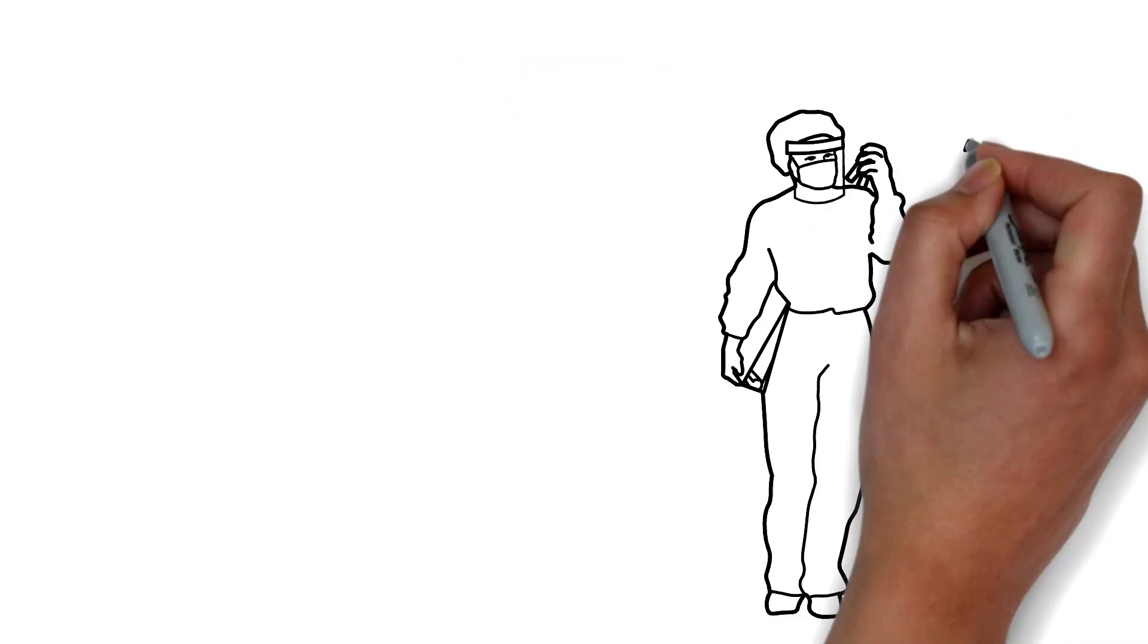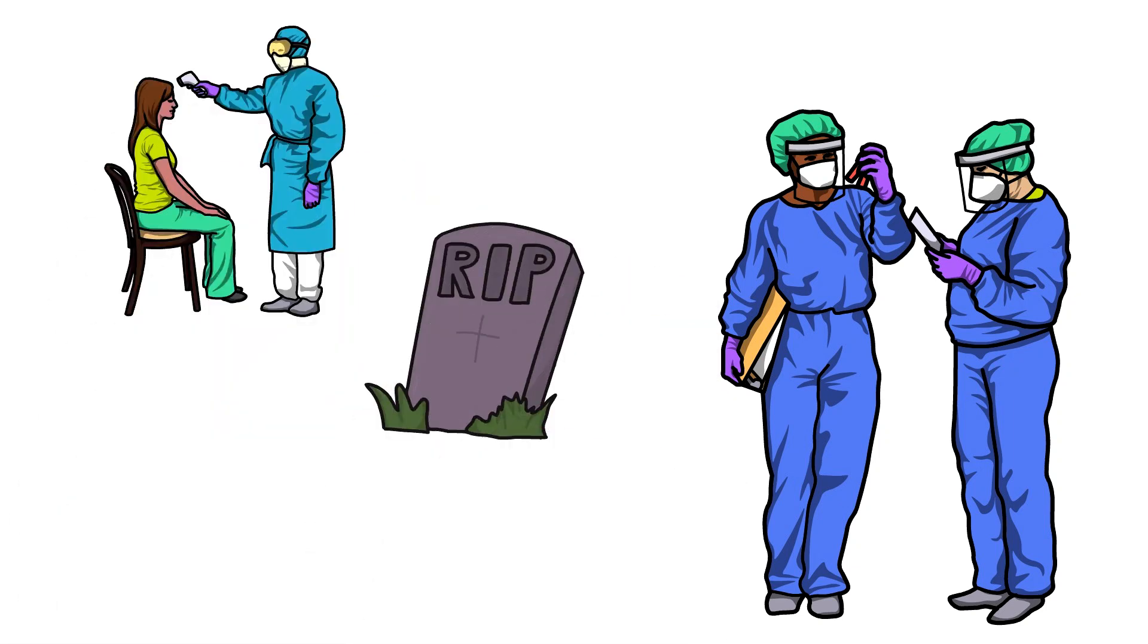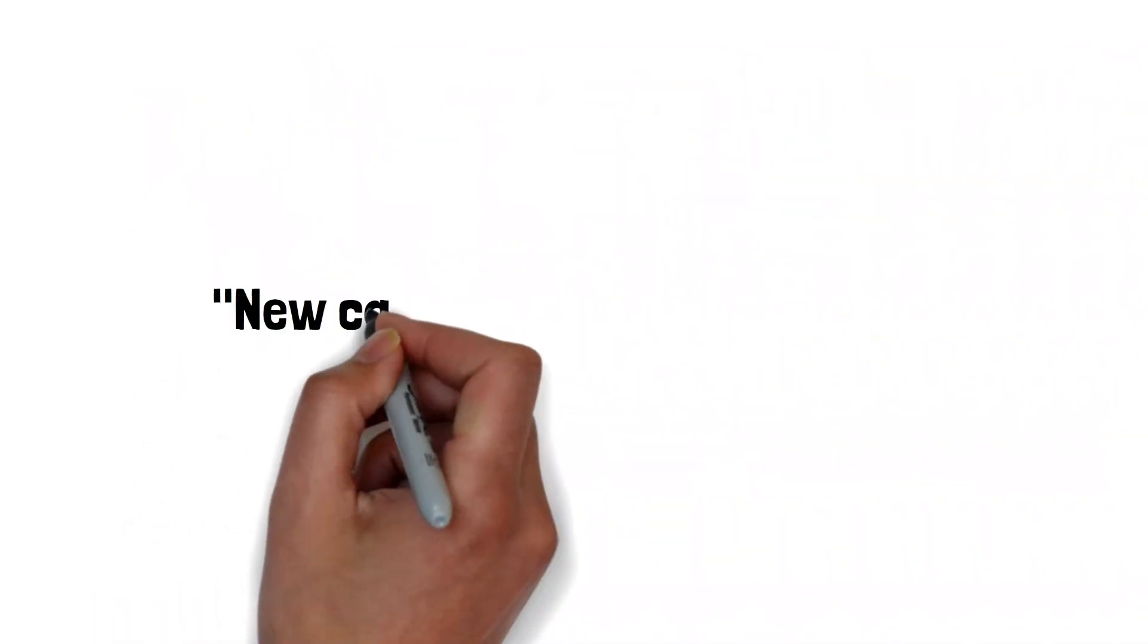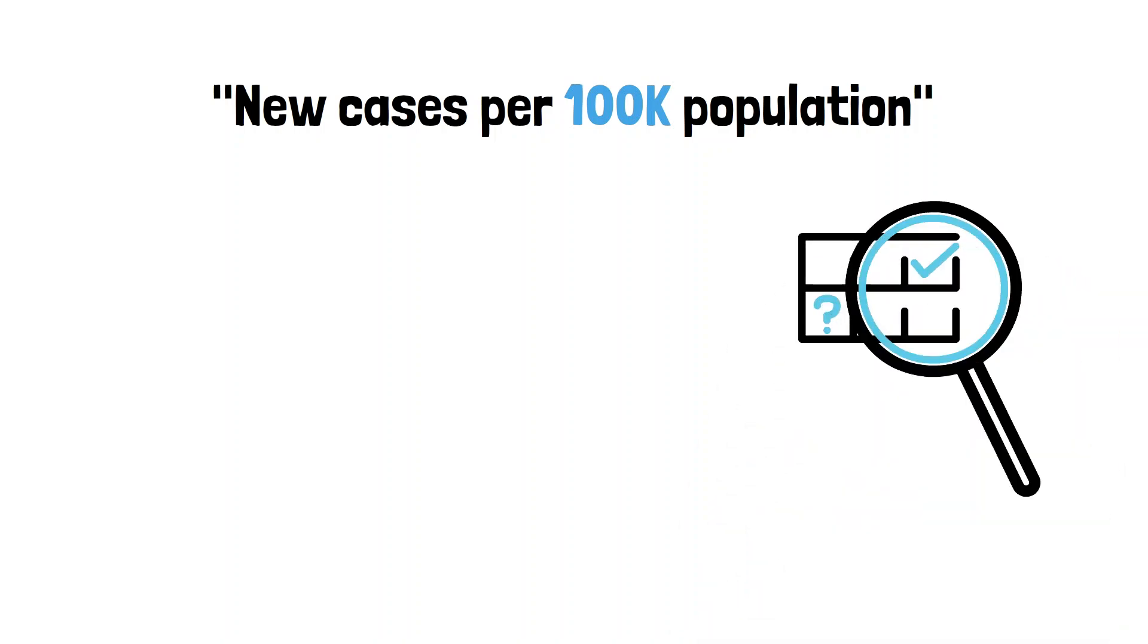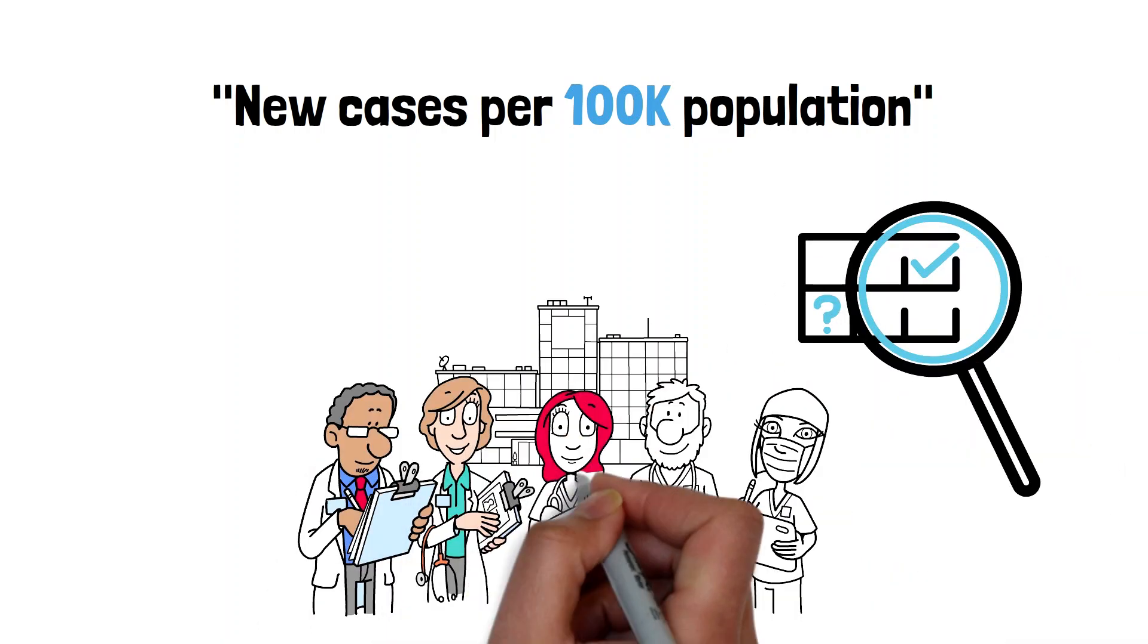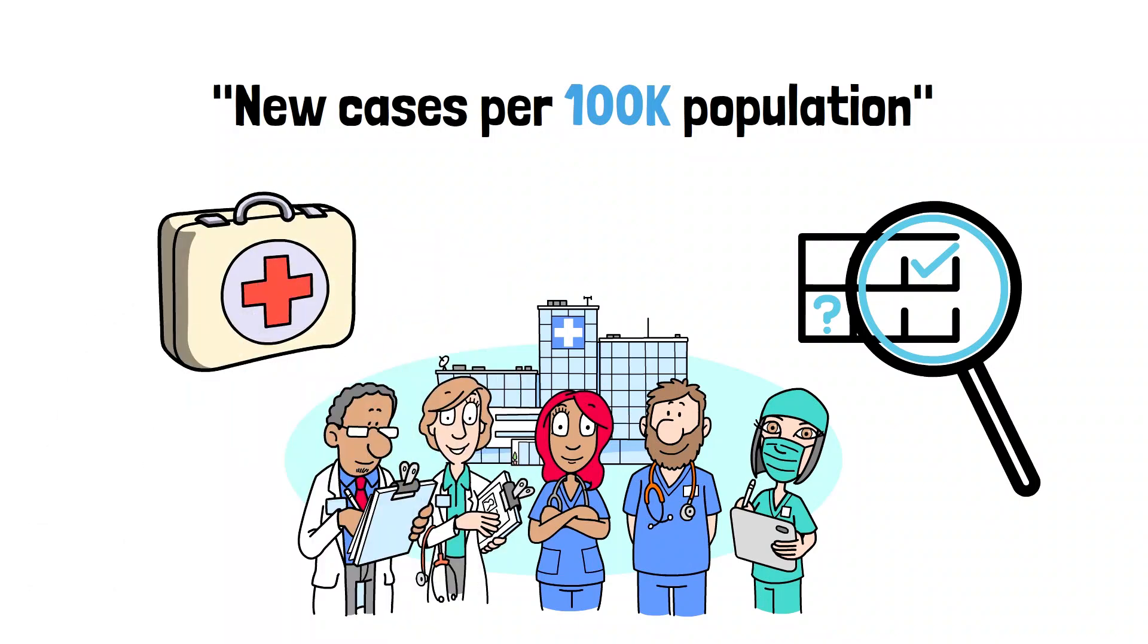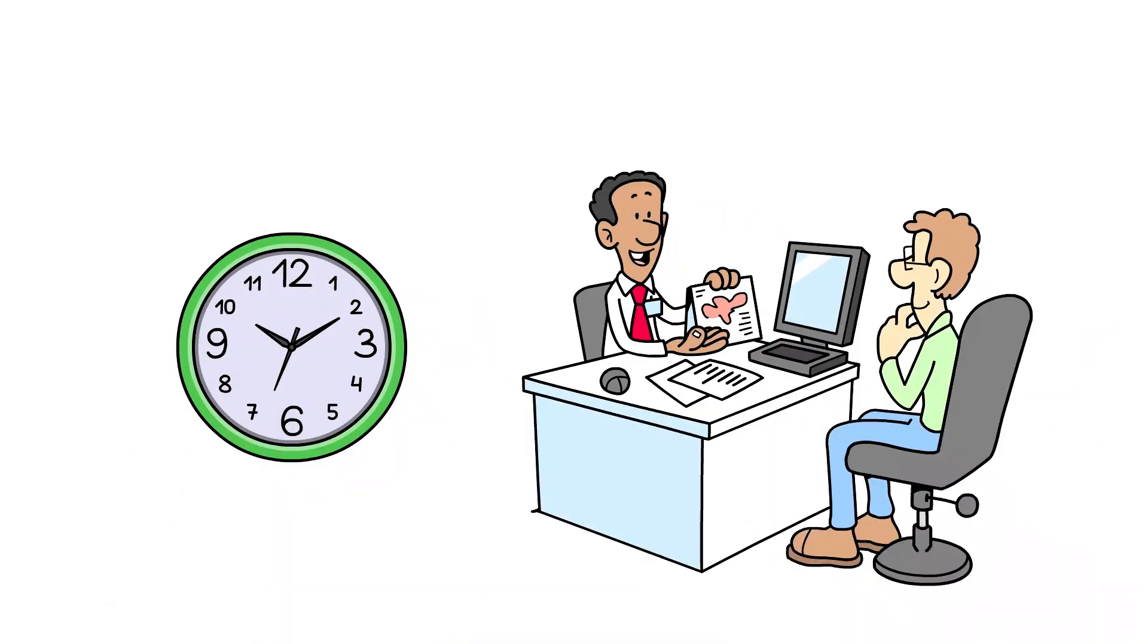Early in the pandemic, many dashboards mixed total cases, deaths, and hospitalizations, hiding critical spikes. By focusing on new cases per 100K population and filtering for regions with similar testing rates, health agencies pinpointed hotspots and sent resources exactly where they were needed. This simple shift in framing saved time and improved public communication.